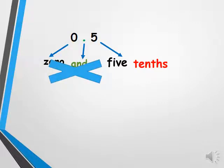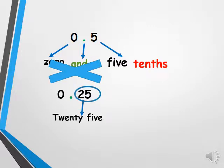Now if we have 0.25, it is the same. We cannot say zero and twenty-five hundredths. We should say twenty-five hundredths. The zero has no value. Thank you.